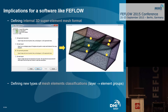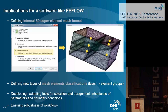In the standard layer-based FEFLOW mesh, we have the slice and layer concept within which we make selections of elements and nodes. Once we don't have this layering anymore, we need another way of classifying elements — so we have the concept of element groups, where elements pertaining to a given class or location can be grouped. We also had to develop tools for selection, assignment, and the inheritance of parameters and boundary conditions.